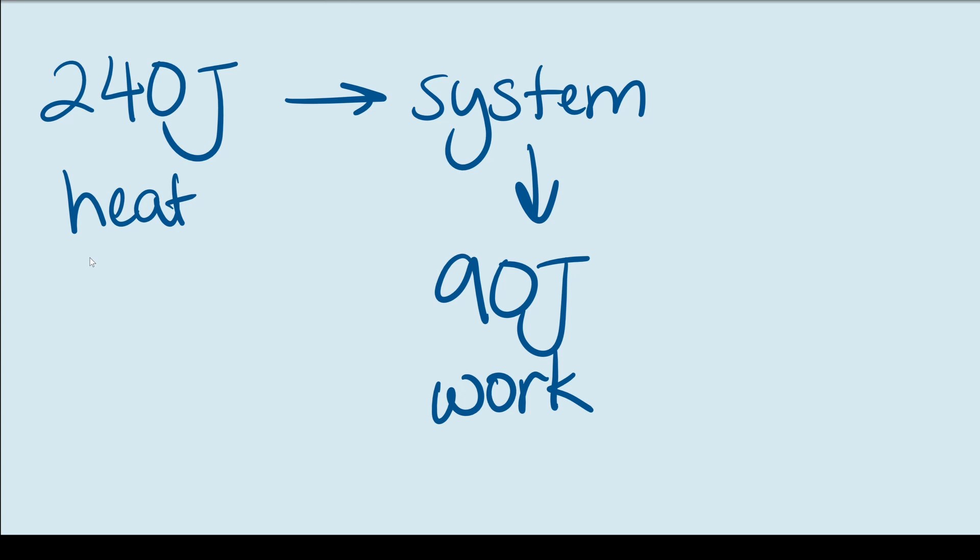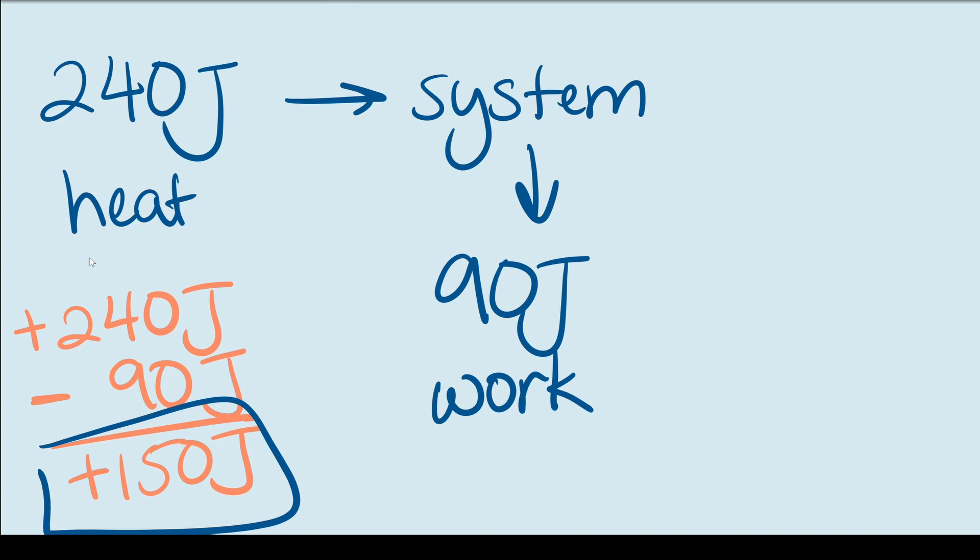Okay, so let's go through this together. The system gains 240 joules in heat. So this is different from the previous questions where it was gaining energy through work. But that doesn't matter. It's still positive 240. Now, the system does work on the surroundings, which means it loses energy. So we'll write that as a loss of energy 240 minus 90 is 150. And that's a positive number right there. So that means the system gained energy and that exact amount was 150 joules.